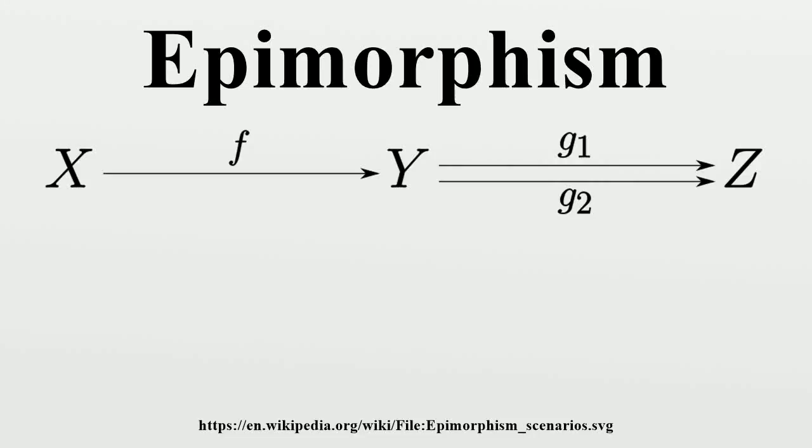In category theory, an epimorphism is a morphism f: X→Y that is right cancellative in the sense that for all morphisms g1, g2: Y→Z.